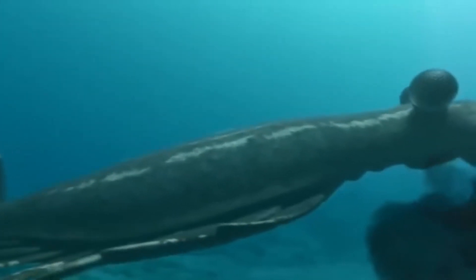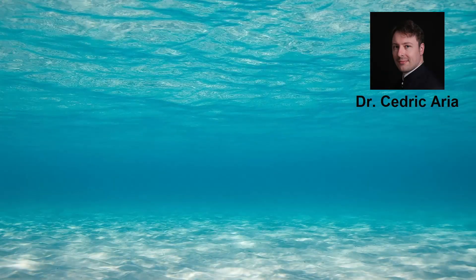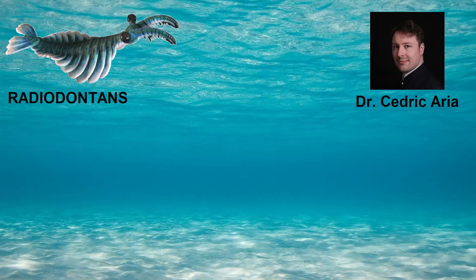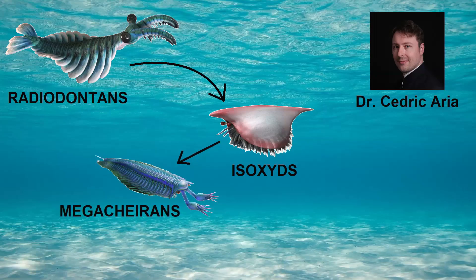Both megacheirans and Isoxys are true arthropods, meaning both have jointed limbs. The current understanding is that after the radiation of the anomalocarid-like arthropods — the radiodontans — one branch that emerges is the Isoxins, the family that includes Isoxys and some other relatives. From there, megacheirans were found to be branching off the Isoxins. There is some consensus between authors that Isoxins are quite basal and that megacheirans are early true arthropods.